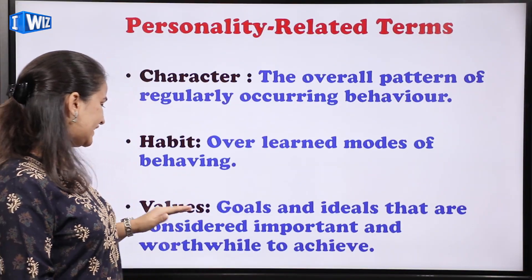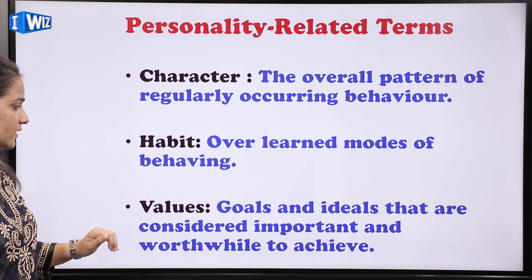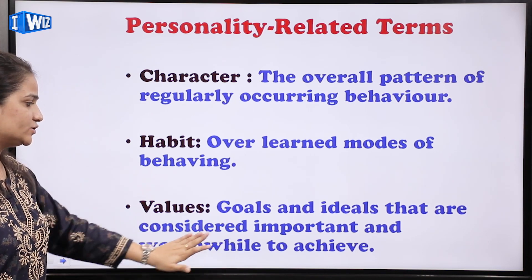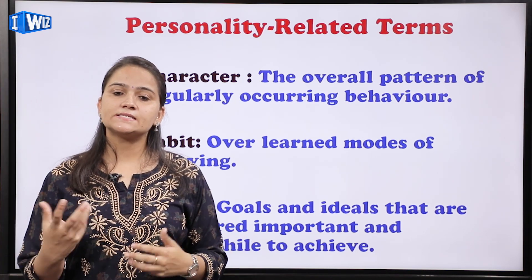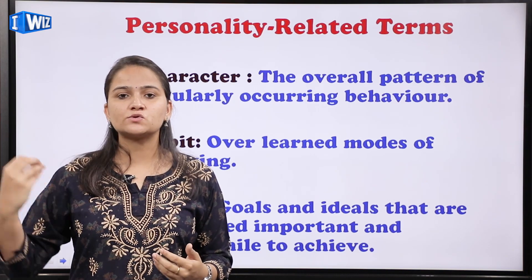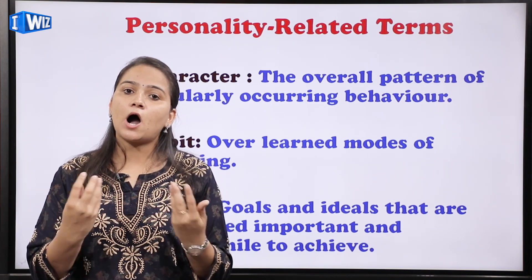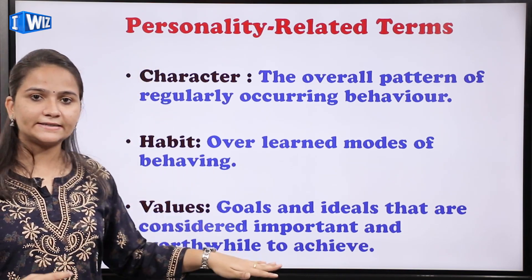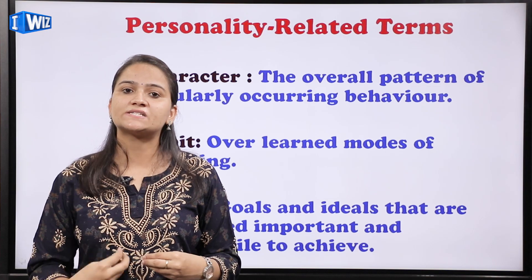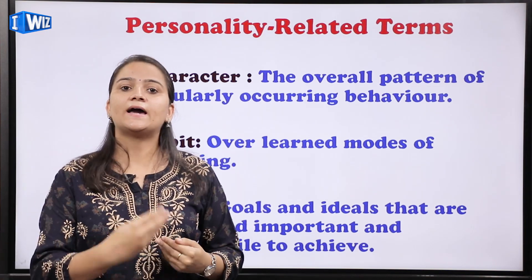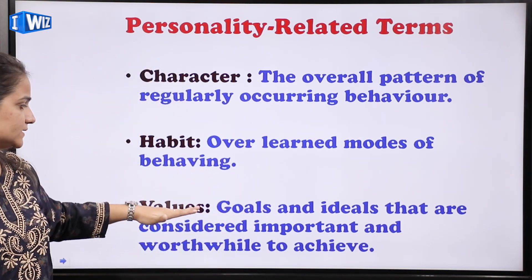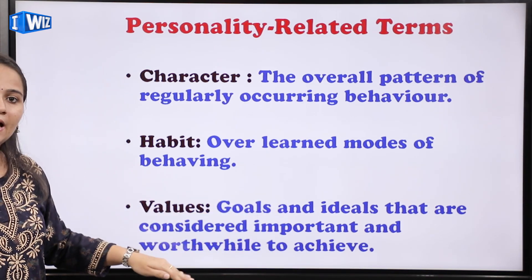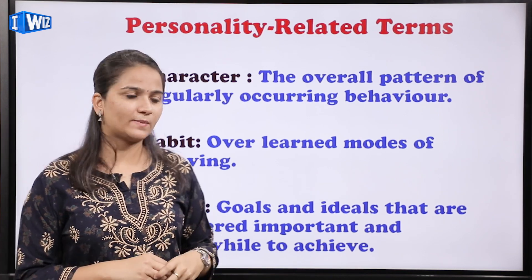The next is values — goals and ideals that are considered important and worthwhile to achieve। यानि एक इंसान की life में हमेशा ऐसी कुछ values होती हैं regarding how he should behave। हो सकता है कोई इनसान punctual नहीं है, but he wants to include that in his system — उसका value system है कि I should always be punctual in life। हर इंसान की अलग अलग values होती हैं, and in your life you do want to achieve those values।